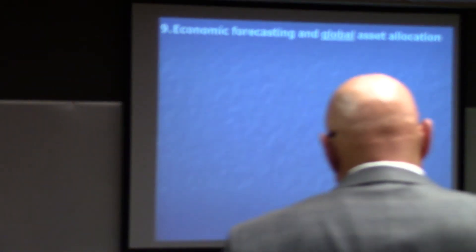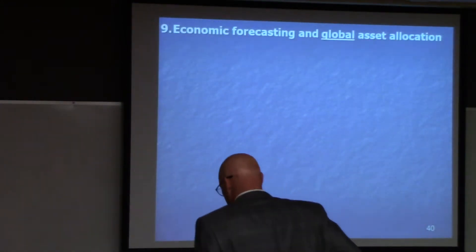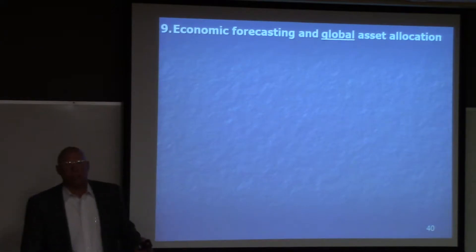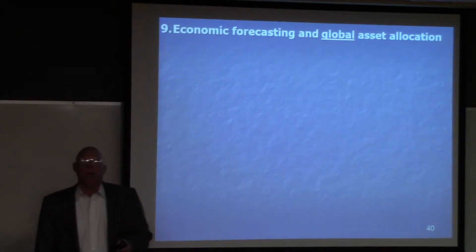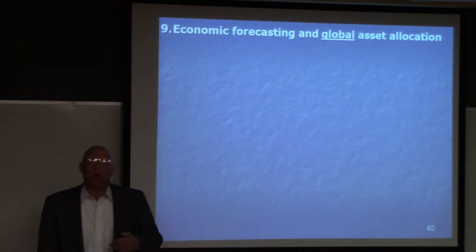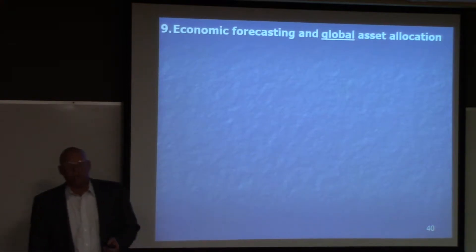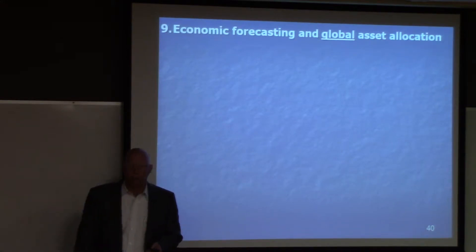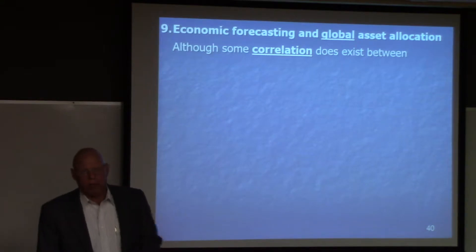Let's look at how our economic forecasts will affect our allocation internationally, and then let's take a deeper, more detailed look at how the US economy is set up. So let's look at economic forecasting and global asset allocation — how do we spread our money into different countries? We've already done a little bit of talking about this, but let's talk first about correlation.